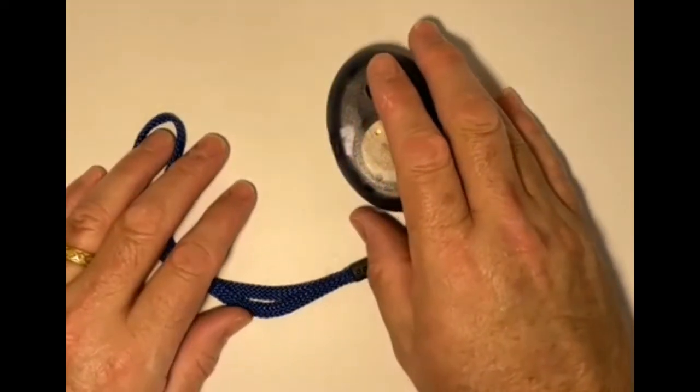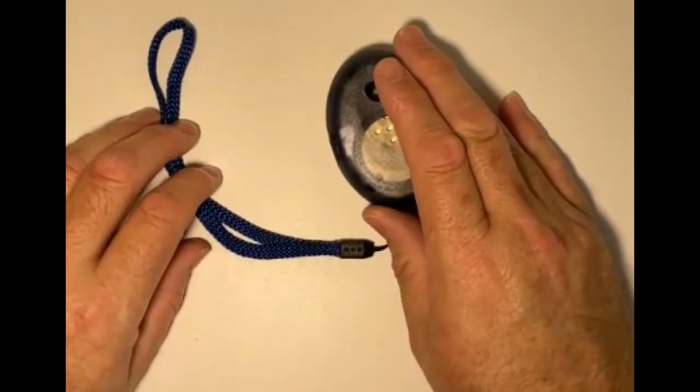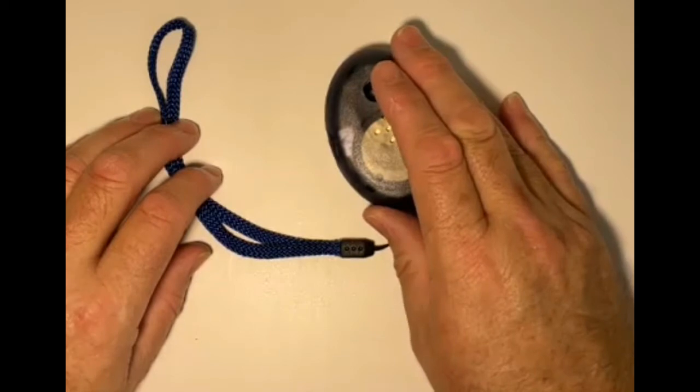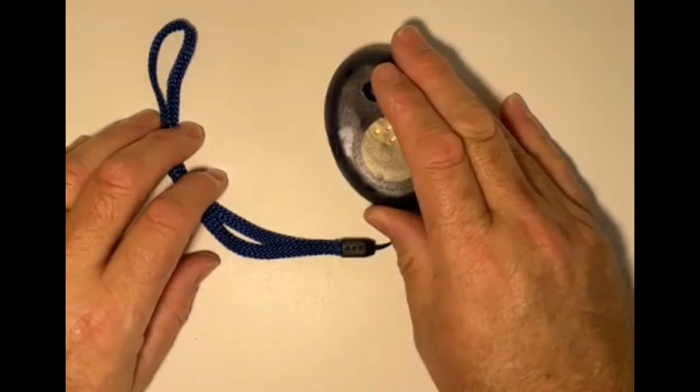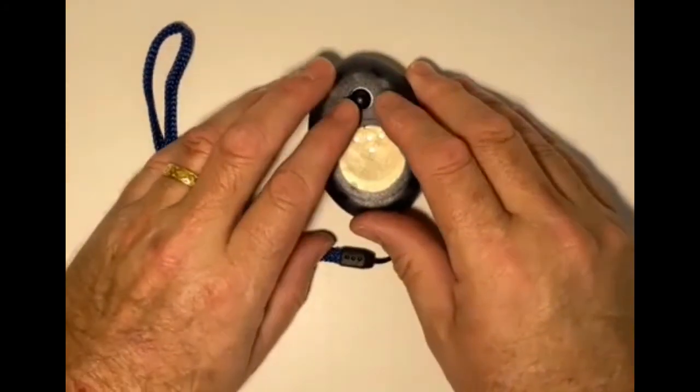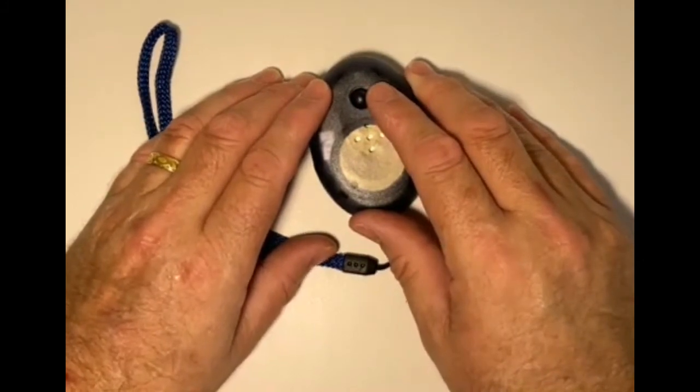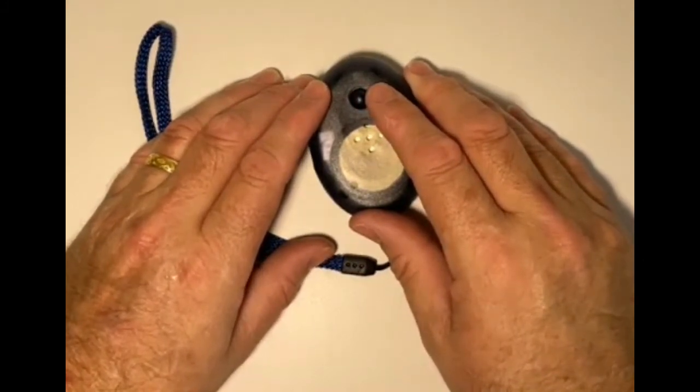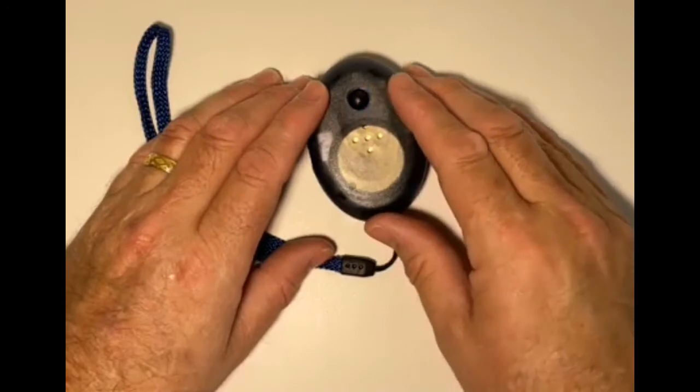It's an oval shape with a little lanyard that you can pop around your wrist or attach to something to keep it hands-free. The button is furthest away from me on the top face of the digital compass, and the lanyard attaches closest to me.